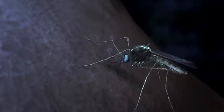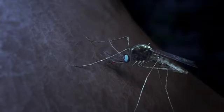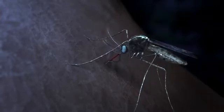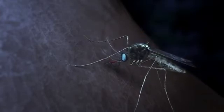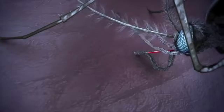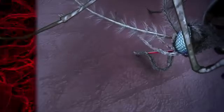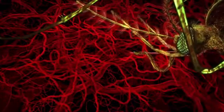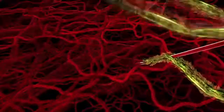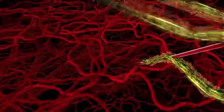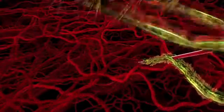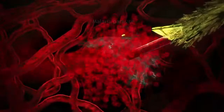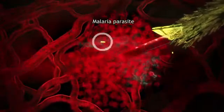This mosquito is infected with the malaria parasite. Because she is pregnant, she has become hungry for human blood. During the bite, she injects saliva to stop the blood from clotting. Her infected saliva also carries the malaria parasite.